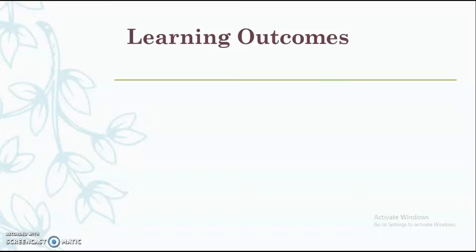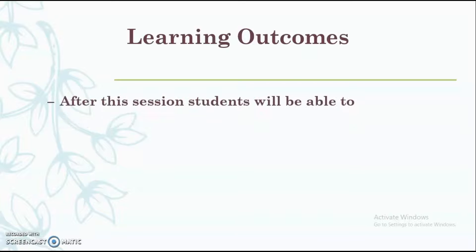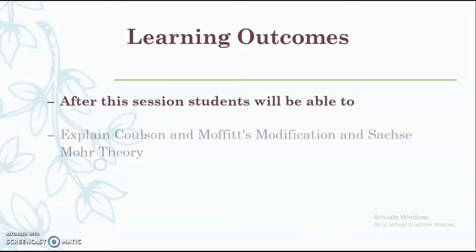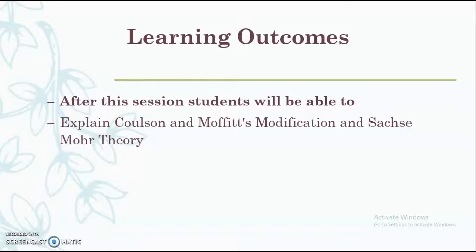First, we will see the learning outcomes of this session. After this session, students will be able to explain the Collagen-Moffitt's modification as well as the Saxe-Mohar theory. These are the two theories which give us information related to the different aspects and limitations of the Bayer strain theory. Collagen-Moffitt's theory will give us information on why cyclopropane has bent bonds, and Saxe-Mohar theory will explain the stability of cyclohexane.